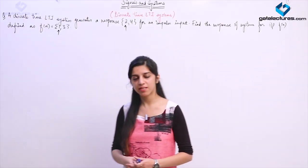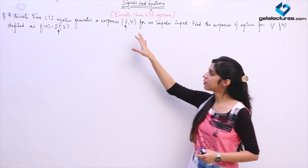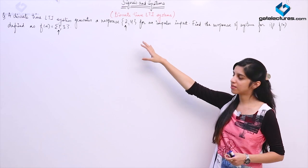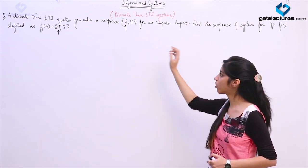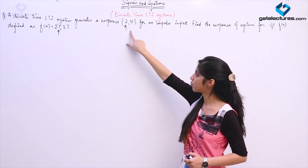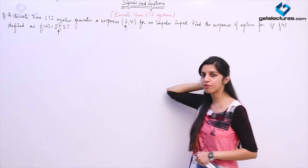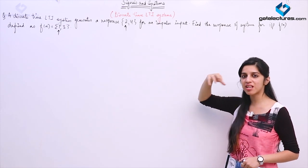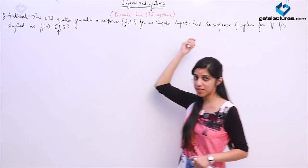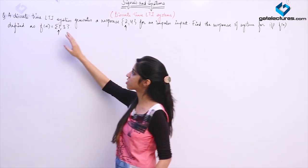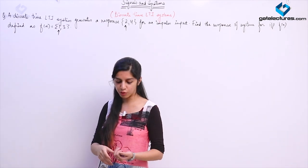Now we look at a question on discrete time systems. They have given that on supplying a discrete time system with an impulse input, we got {2, 4} as output. Now they are asking: if the input is changed to some signal f[n] which is defined as {1, 3}, then what is going to be the output?